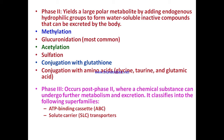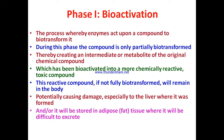Phase two addition processes include methylation, glucuronidation, acetylation, sulfation, conjugation with glutathione, and conjugation with amino acids such as glycine, taurine, and glutamic acid. Phase three occurs after phase two, where a chemical substance can undergo further metabolism and excretion. Excretion is achieved through transporter proteins classified into two superfamilies: ATP-binding cassette (ABC) and solute carrier transporters (SLC).